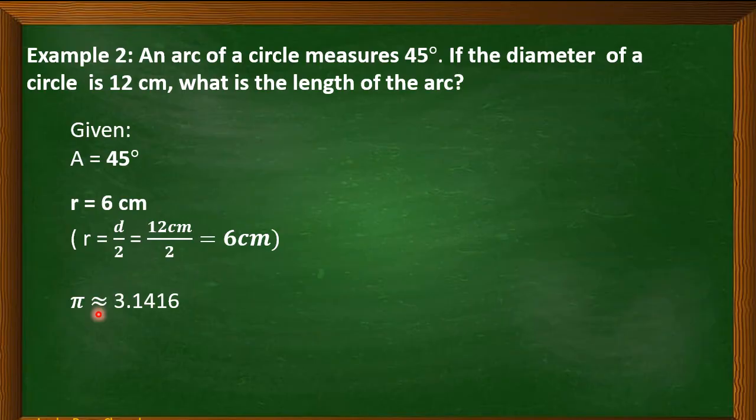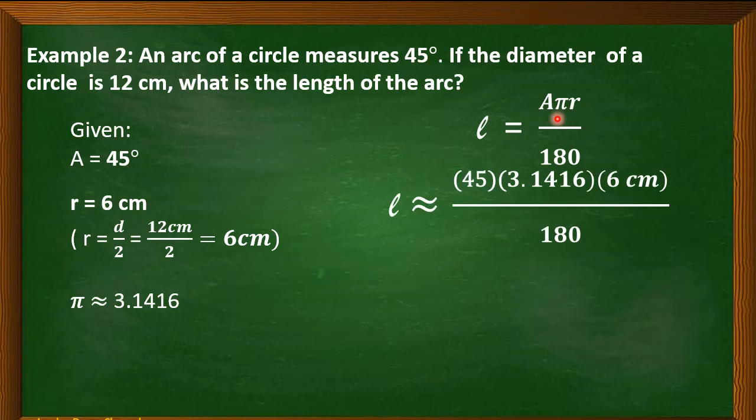And we will be using again, the approximate value of pi up to 4 decimal places, which is equal to 3.1416. So, the formula we have, arc length equals AπR over 180. Now, let's substitute.